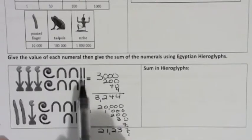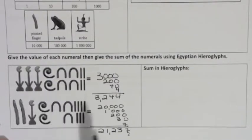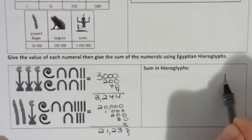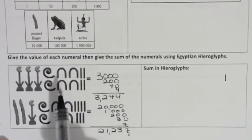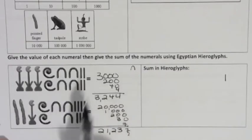Well, in hieroglyphs, we would add up all the strokes and there's 11. So we wouldn't put 11 strokes because after 10 strokes, we can make a heel bone. So we'd say, okay, we have one stroke. And then we're carrying over a heel bone.